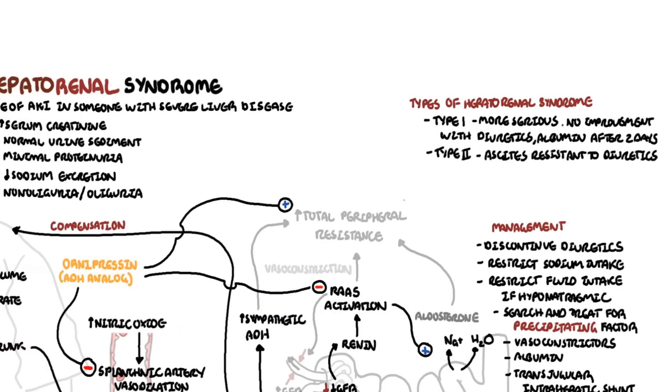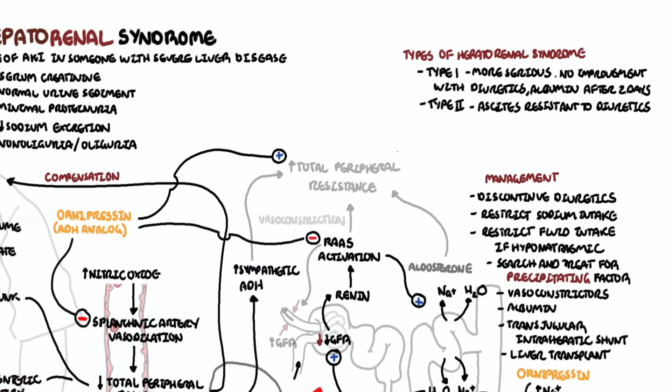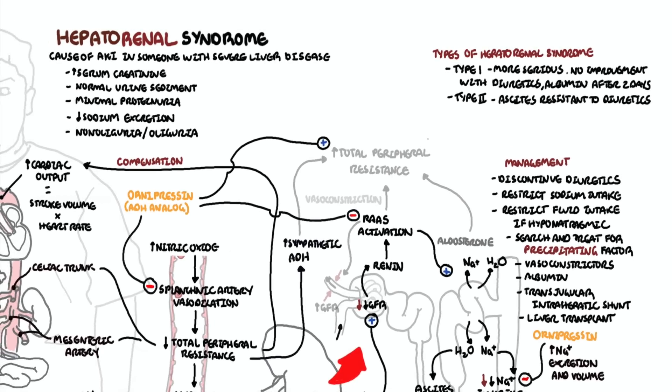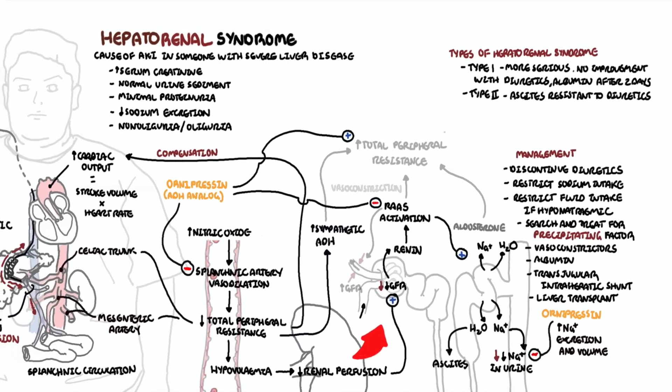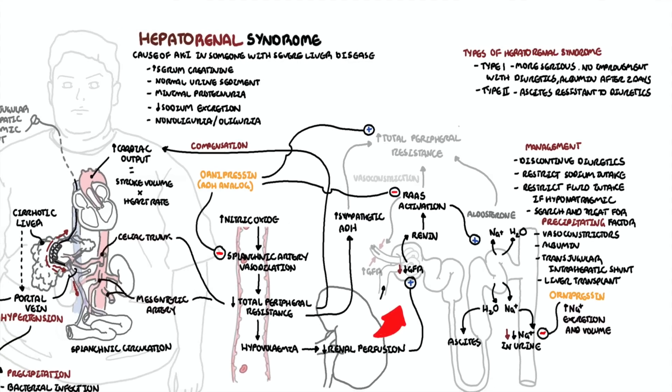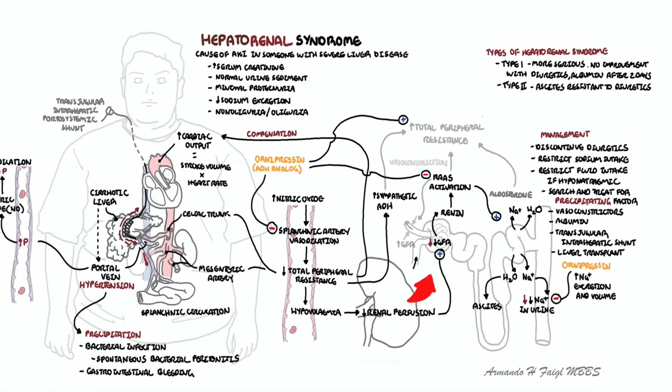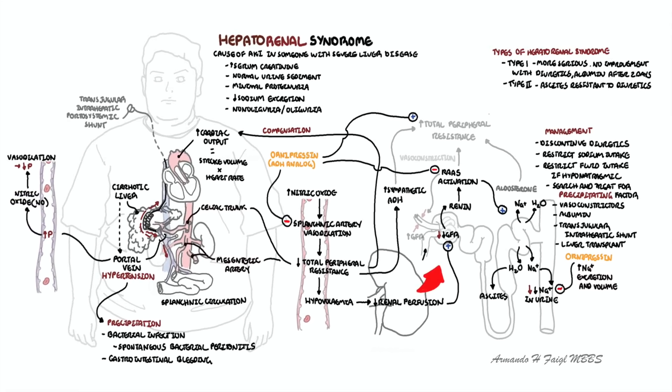Thank you for watching this video, I hope you enjoyed it. Hepatorenal syndrome is a pretty complicated topic, but essentially it's where you have splanchnic vasodilation from nitric oxide, and this essentially causes the AKI. There are two main types, type 1 and type 2, type 1 being more severe.